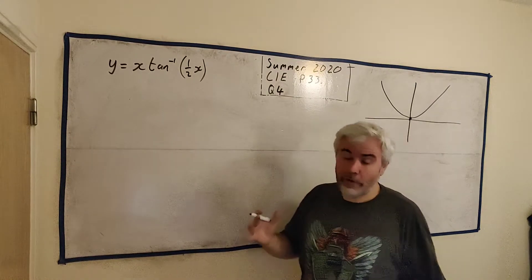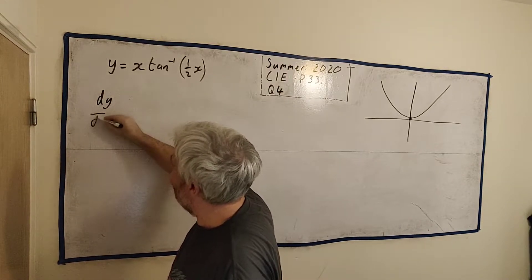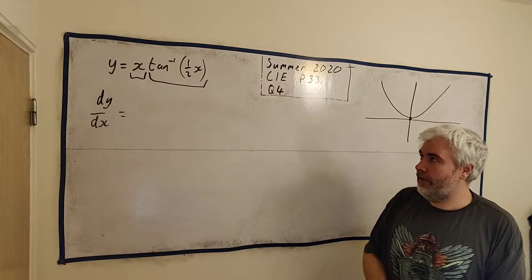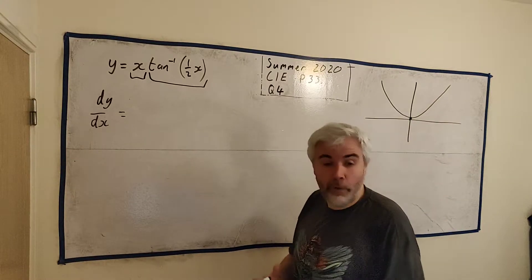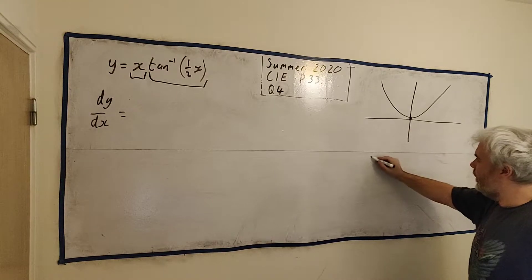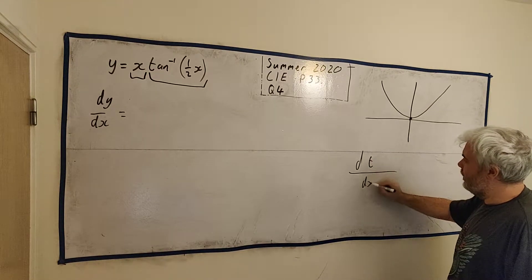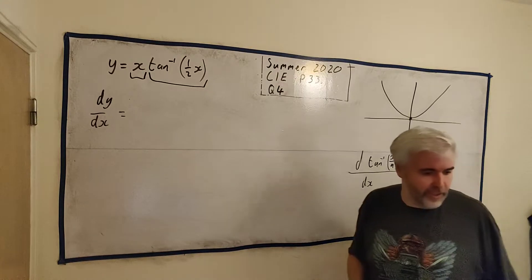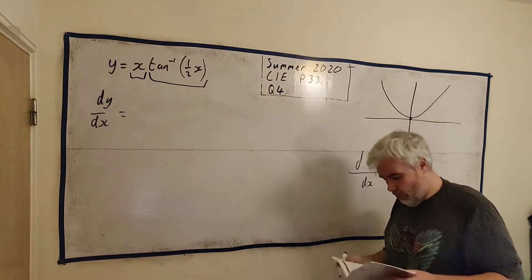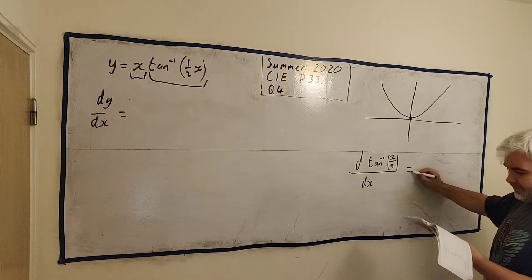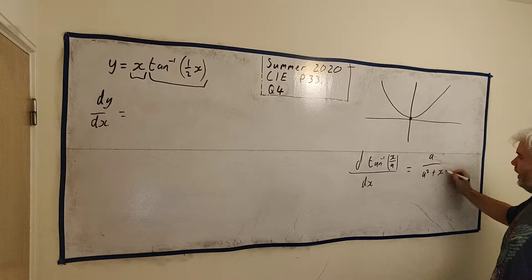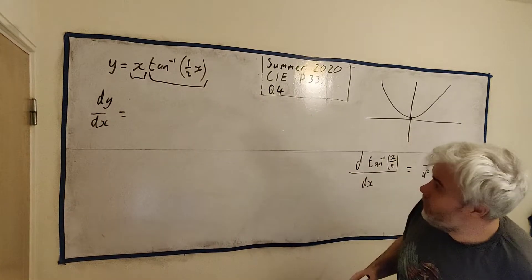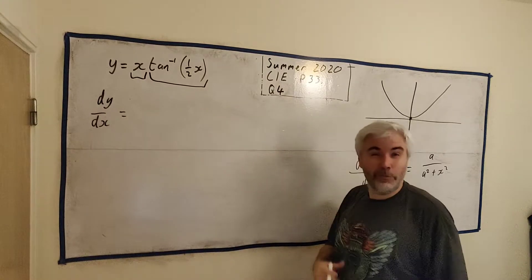Now part A, they ask us to find the derivative of this. They want dy/dx. This is split into two expressions. We just need to use the product rule on this. It looks very scary because of the inverse tangent, but we're actually given the answer to that. The derivative of d/dx of the inverse tangent of x divided by A is equal to A divided by A squared plus x squared. In this case, there's an x divided by 2, so we can differentiate the tangent fine. We can differentiate the x fine. So we'll just use the product rule.